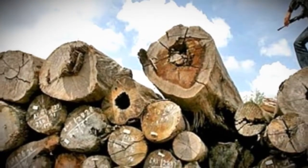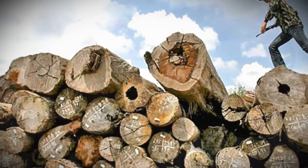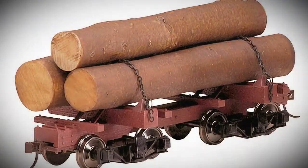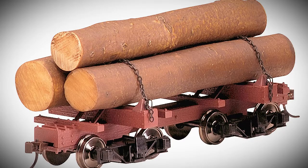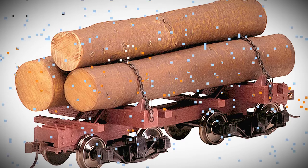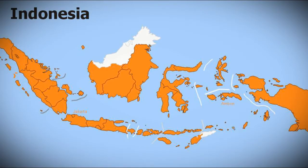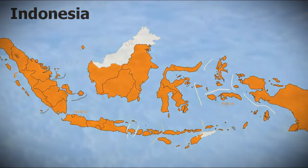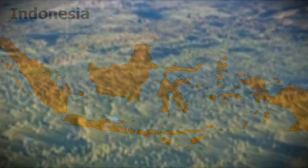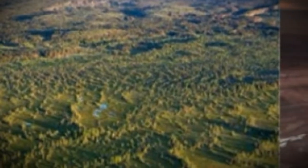Of approximately 11 million hectares of palm oil plantations around the world, about 6 million hectares are found in Indonesia. Indonesia produces 35% of the world's palm oil. Indonesia's palm oil plantations stretch over 6 million hectares in total, which is about 41,666 rugby fields to put in perspective.